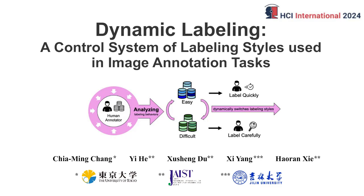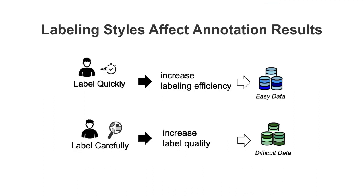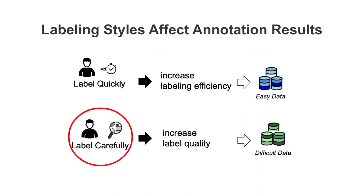Dynamic Labeling is a control system of labeling styles used in manual image annotation. Previous research shows that a label quickly style can increase labeling efficiency when the data is easy, and a label carefully style can increase label quality when the data is difficult.